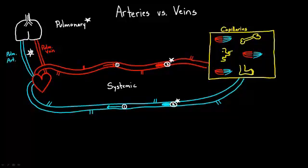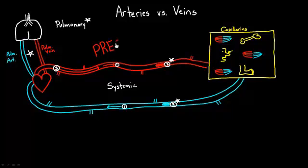Point number three: arteries are high pressure. The heart is pumping blood out under very high pressure, so I think of arteries as a fast-flowing river — high pressure. And there's not that much volume in the arteries; if you froze time and figured out where all the blood was, not too much of it would be in the arteries. So it's a low volume system.